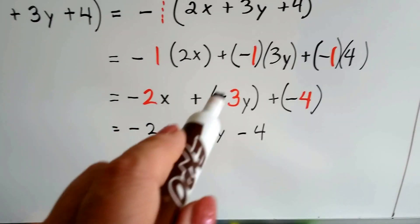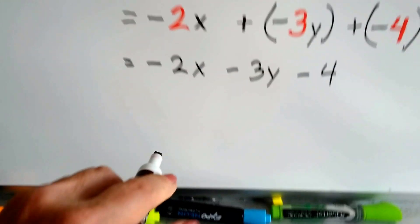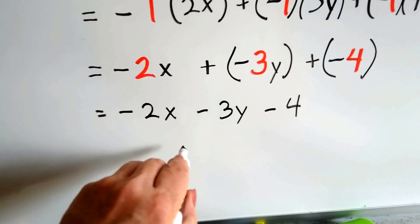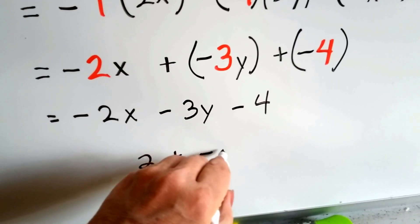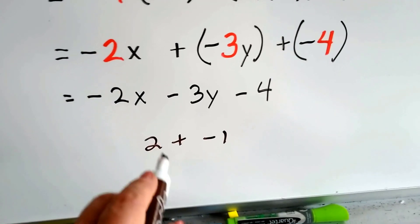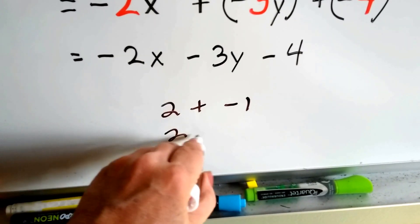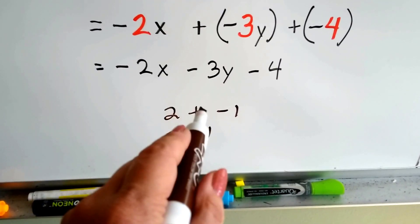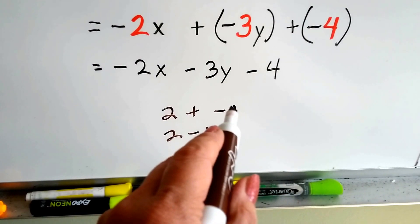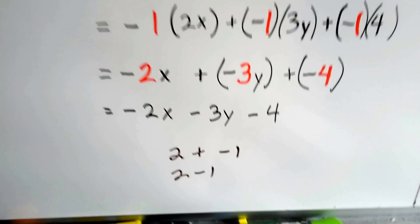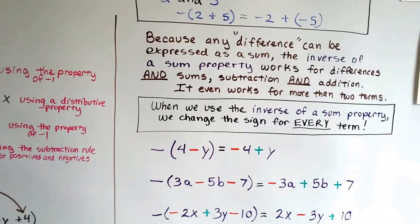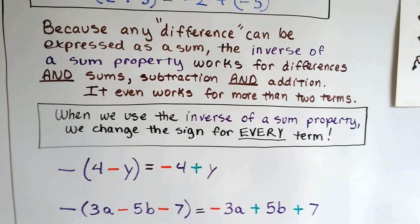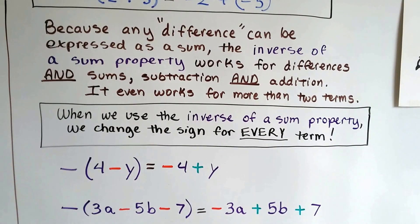Remember the plus and minus signs: if you've got 2 plus a negative 1, that's the same as saying 2 minus 1. So if you have two candies and you're going to add taking one candy away, you're taking one candy away. Because any difference can be expressed as a sum, the inverse of a sum property works for both differences and sums — subtraction and addition.